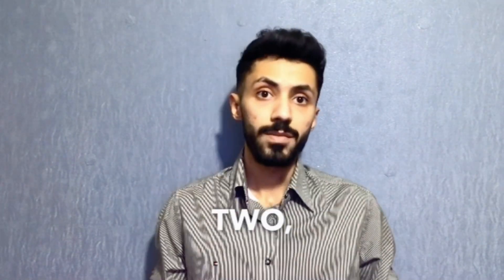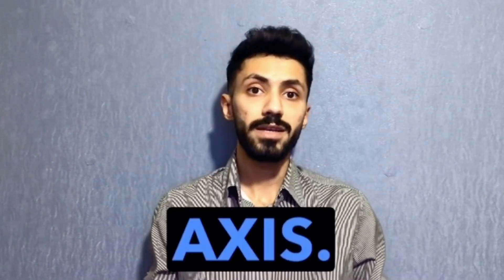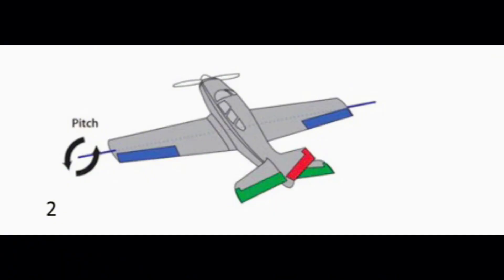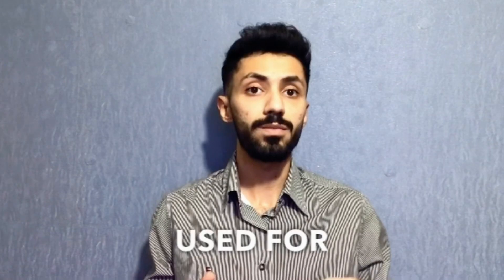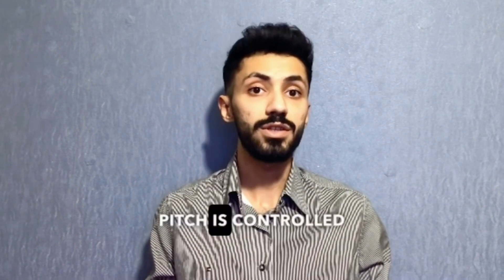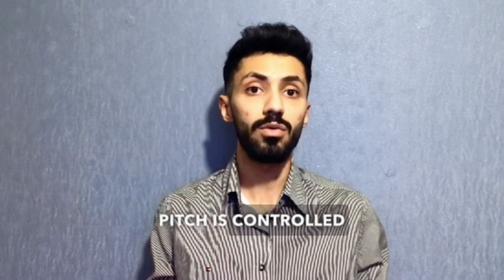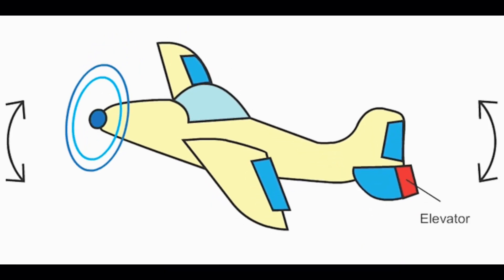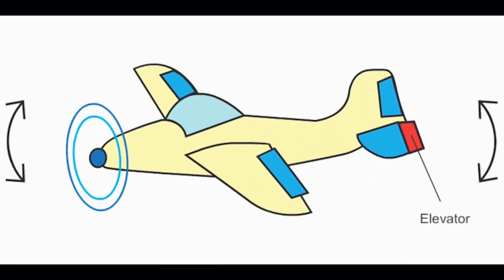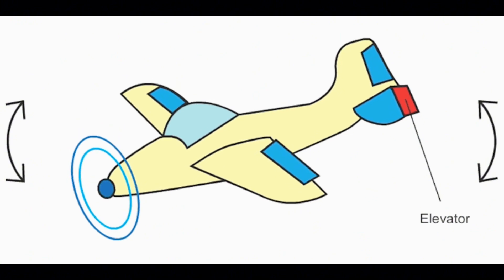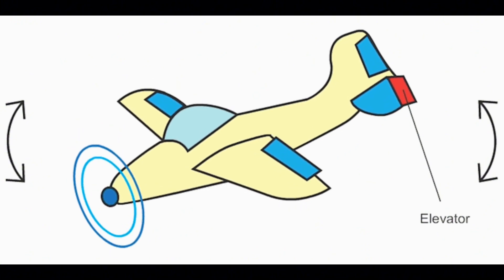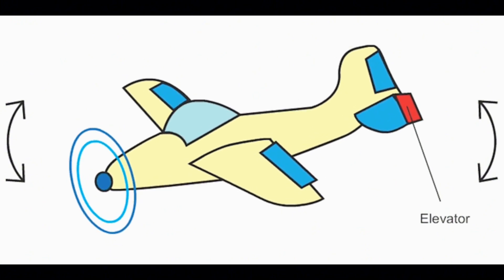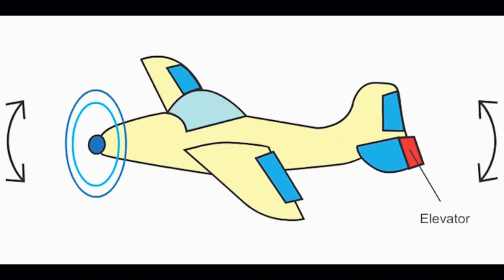Second, the lateral axis. Its rotation about the lateral axis is used for pitch. Pitch is controlled by the elevator, or by an all-moving tailplane or stabilizer.